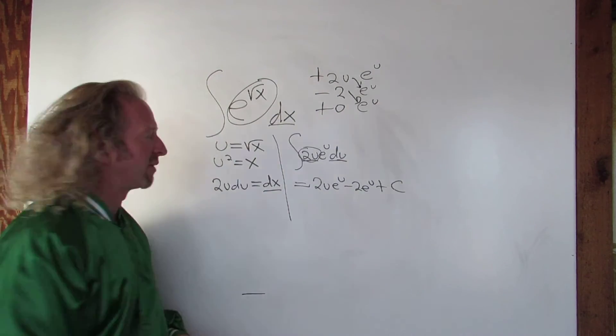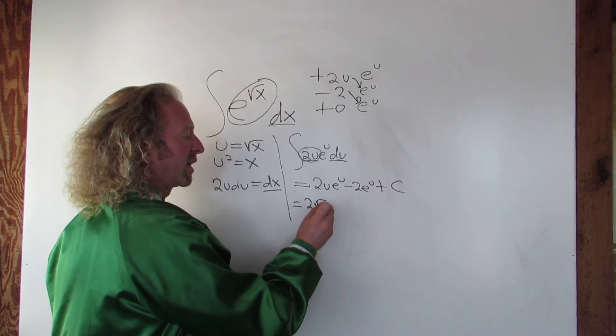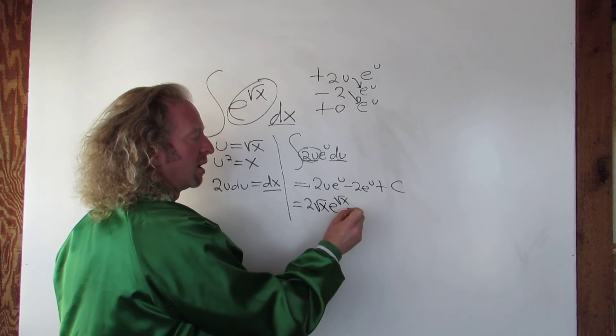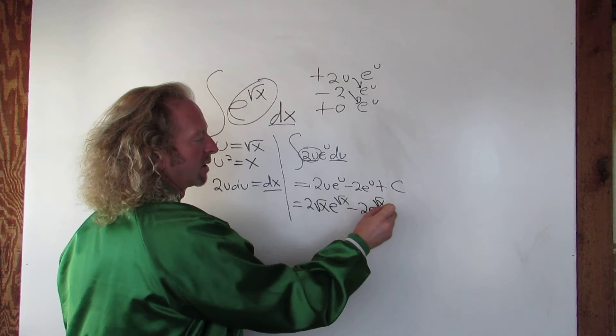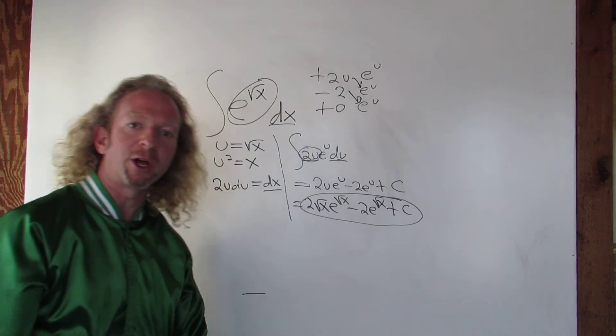Last thing to do is replace u with the square root of x. So we get 2 square root of x e to the square root of x minus 2 e to the square root of x plus our constant c. That's it. Hope that helped.